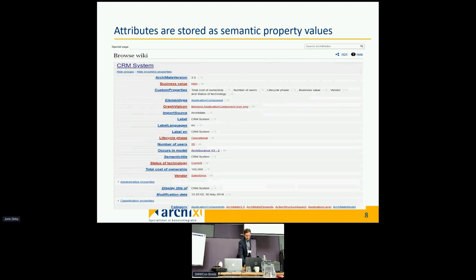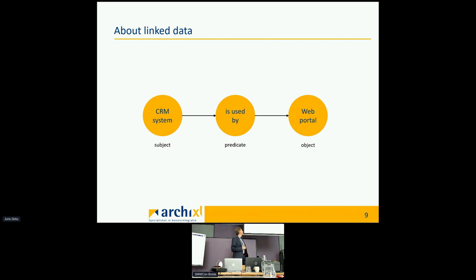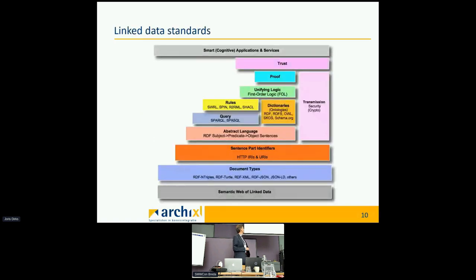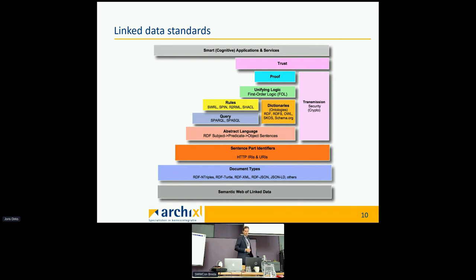Now about linked data modeling: we express linked data as a subject with a predicate and an object — that's how you create RDF files. You probably know all these standards used in the semantic web: RDF Turtle, XML, JSON, JSON-LD. We have query languages like SPARQL, we describe our ontology in OWL or RDFS, you can use SKOS, schema.org, and you can describe rules in terms of SHACL.